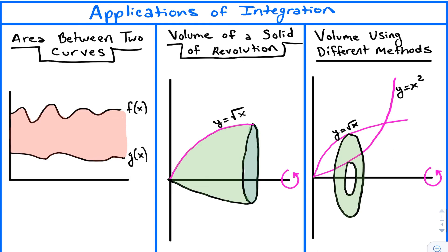Next, we have to find the volume of a solid of revolution. You start with a function — here y equals the square root of x — and you rotate it around the x-axis, or around a line, or the y-axis. You get a solid and find its volume by taking cross sections and adding them up, which is essentially integrating. There are different methods; sometimes your cross sections are washers, and there are a bunch of different things you'll do with volumes of solids of revolution.